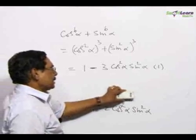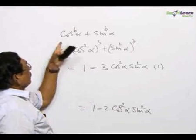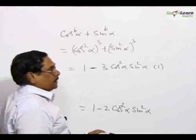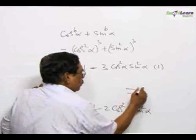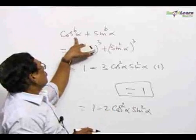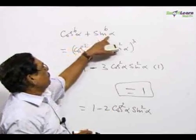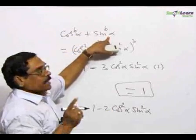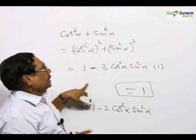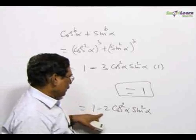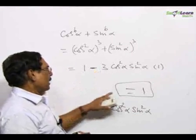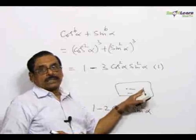Now, substituting these results into the given expression, you will find the whole thing is reduced to be equal to 1. I have simplified cos power 6 α + sin power 6 α and cos power 4 α + sin power 4 α, and placing these in the given problem, the answer equals 1.